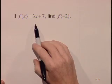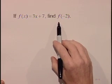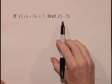If f of x is equal to 3x plus 7, find f of negative 2.